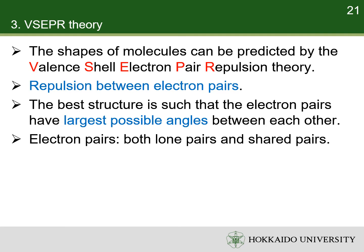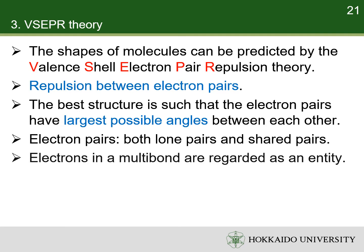The electron pairs refer to both lone pairs and shared pairs in bonds. The electrons in a multi-bond are regarded as an entity. In this chapter, we will discuss molecules with one central atom. For molecules with more than one central atom, each central atom can be discussed with VSEPR theory separately.